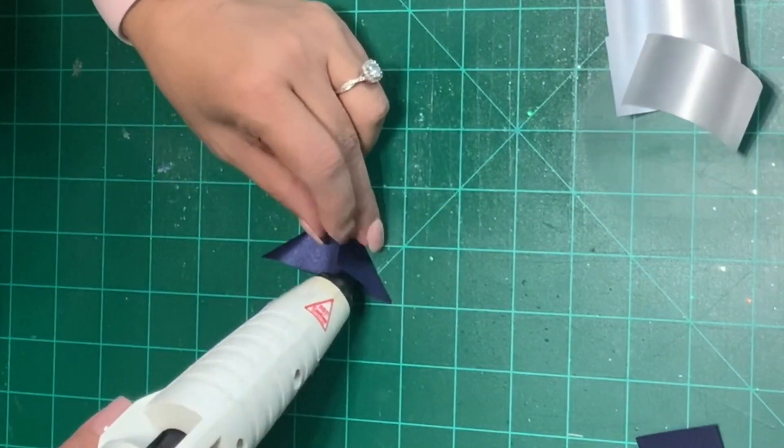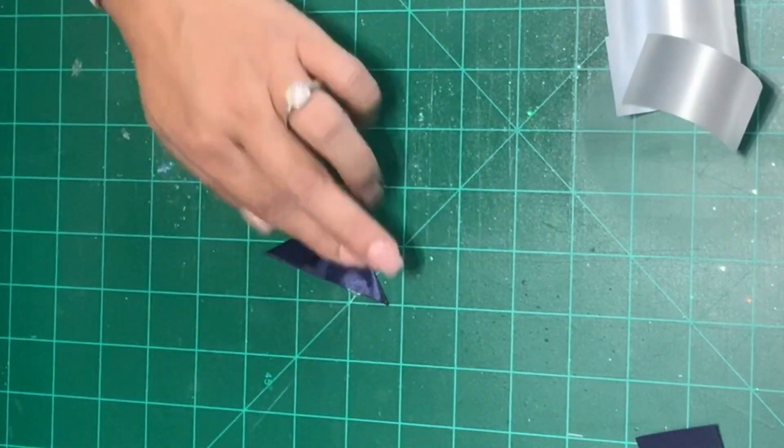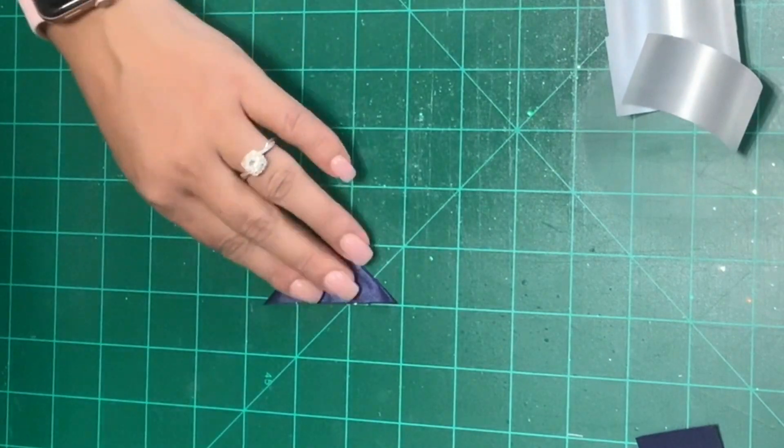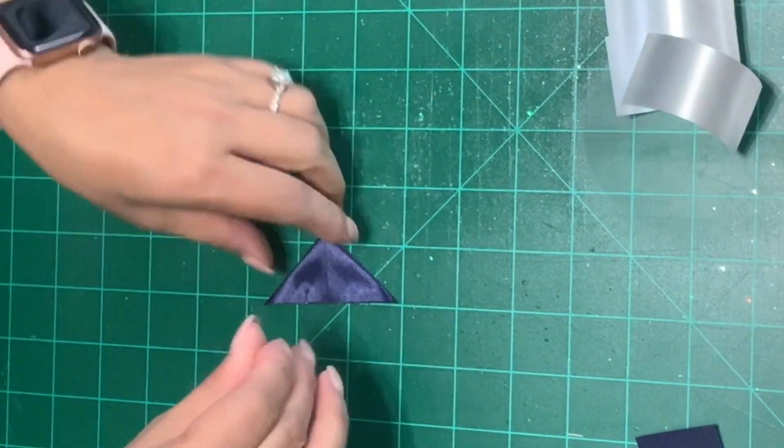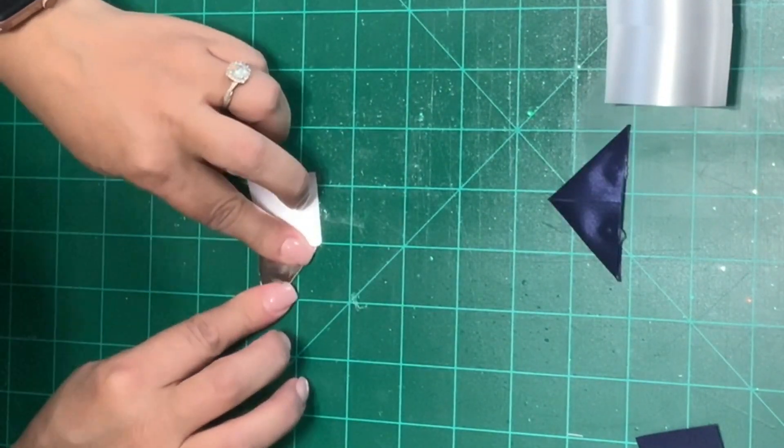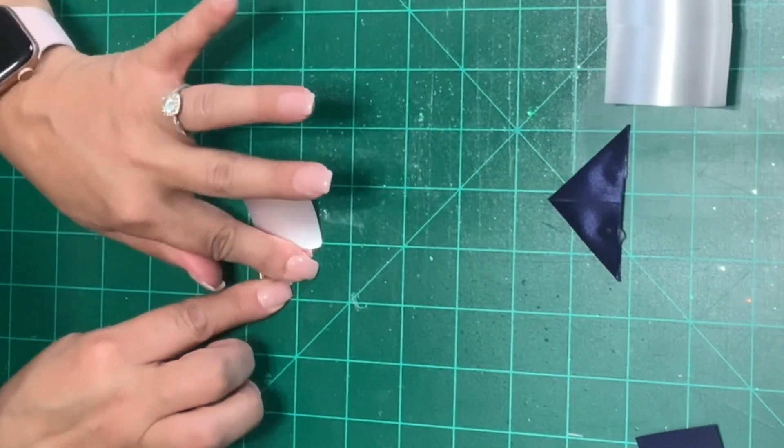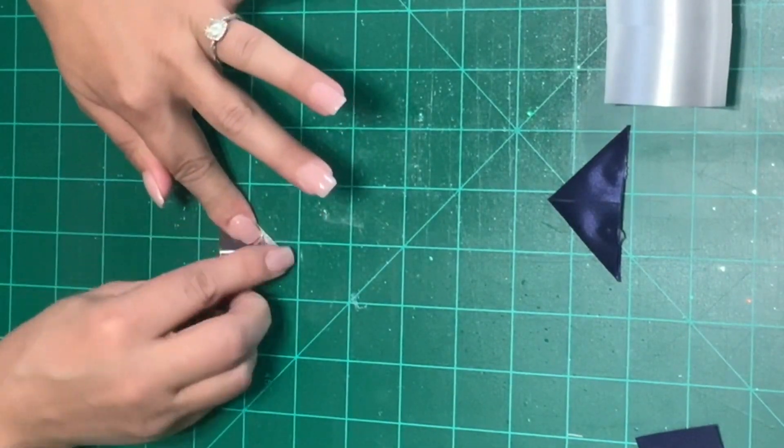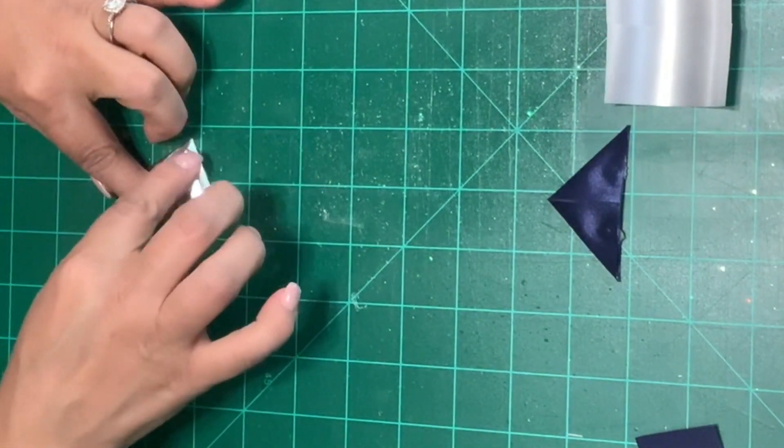Then we'll glue both sides down with our glue gun. This will make an arrow. Now let's make a silver one. Again fold each side down to make a triangle. Then glue. Then continue to make triangles with the rest of your strips.